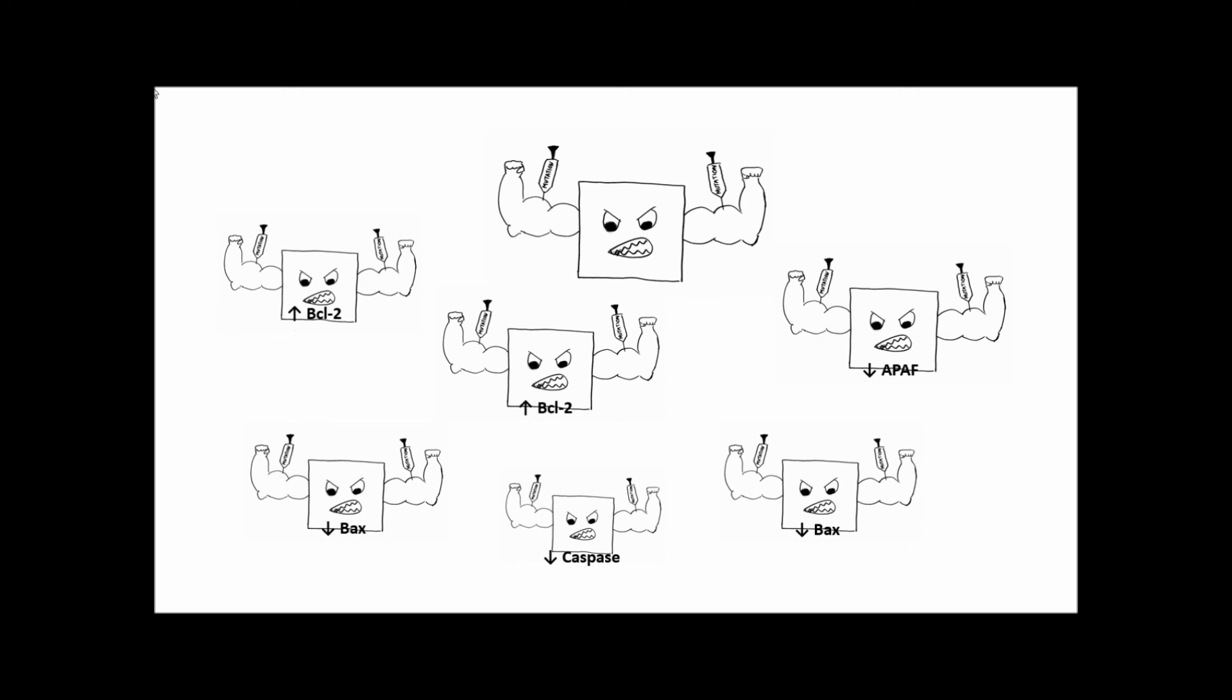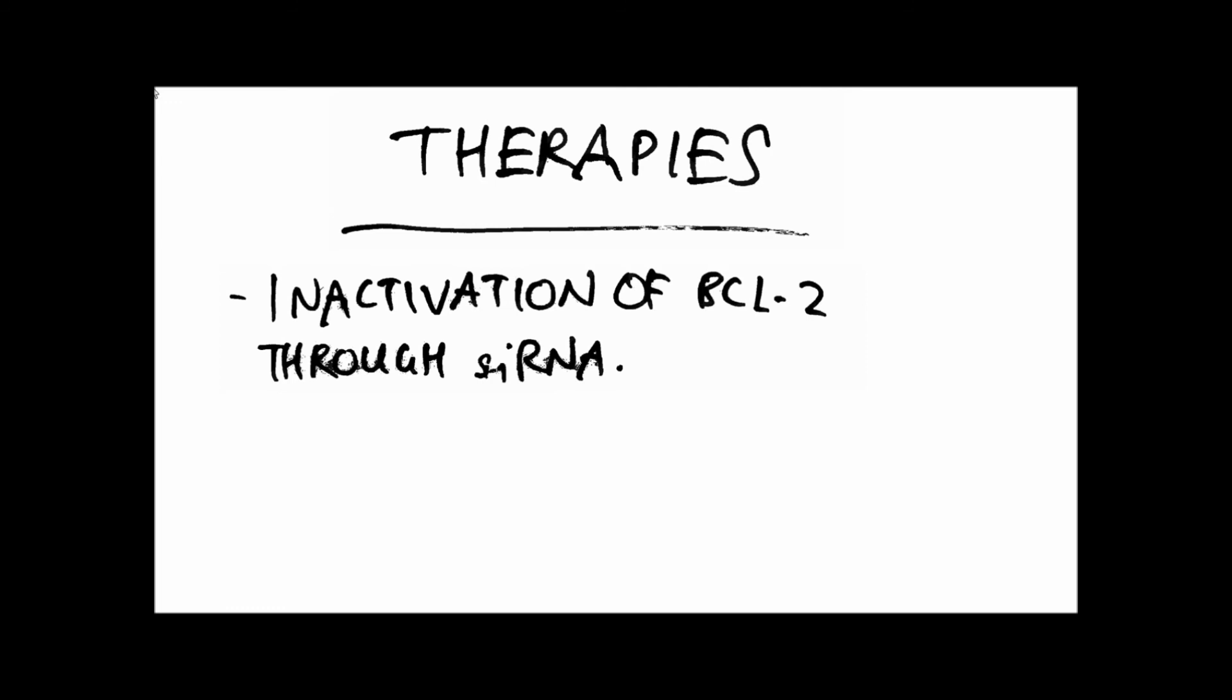Activation of apoptosis in cancerous cells is an ideal therapeutic goal in treating cancer. Some proposed therapies include inactivation of anti-apoptotic proteins such as BCL2 through siRNA, or restoration of pro-apoptotic proteins through gene therapy.